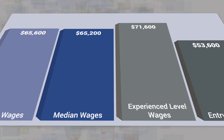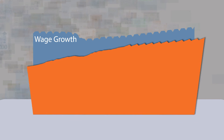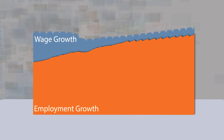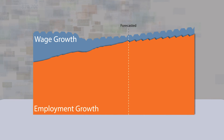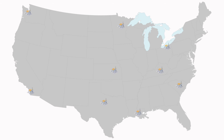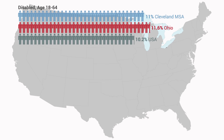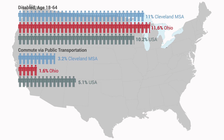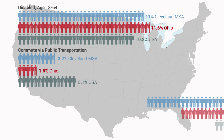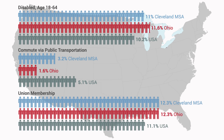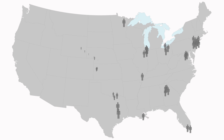You need information about your industries: historical wage growth, employment growth, forecasts, alternative forecasts. How robust is the local supply chain? How about some demographics? How many local workers use public transportation? What is the unionisation rate? What about some population projections?